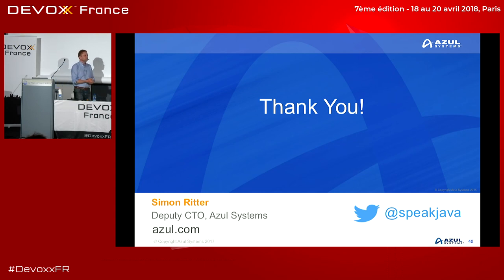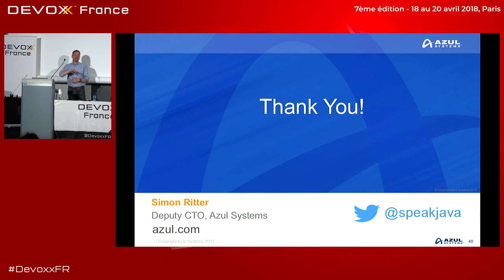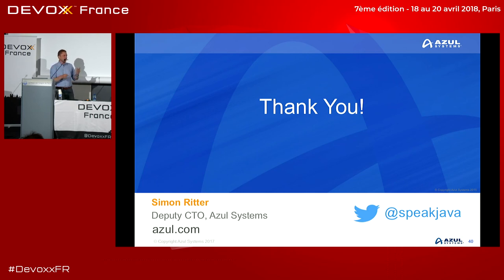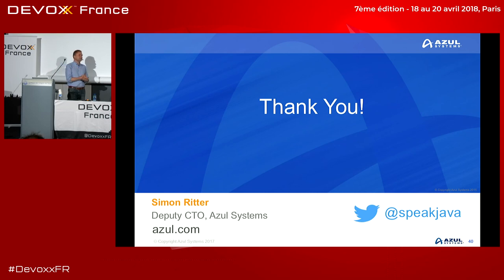Q: How should our thinking change now that there's a new Java every six months? The public updates are only going to be available for six months until the next release comes out. If you want to continue using Java for free, you'll have to update your JDK every six months. Because there are a lot of things changing — features being removed as well as added — that could require work each time you need to move to a new version. It's something you should definitely consider when looking at how you're going to deploy Java in the future.